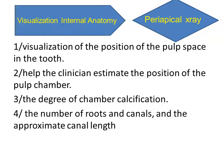The bitewing x-ray is better to estimate the position of the pulp chamber, degree of chamber calcification, and number of roots and canals. To approximately estimate the canal length, a periapical x-ray can do that better than the bitewing.